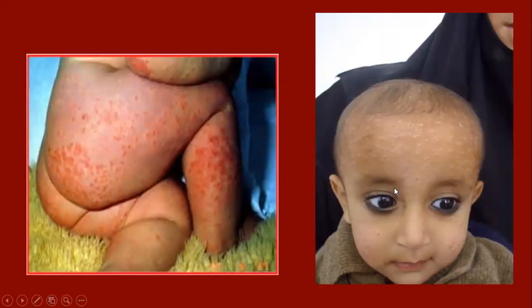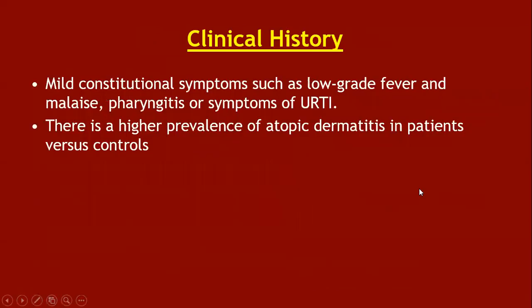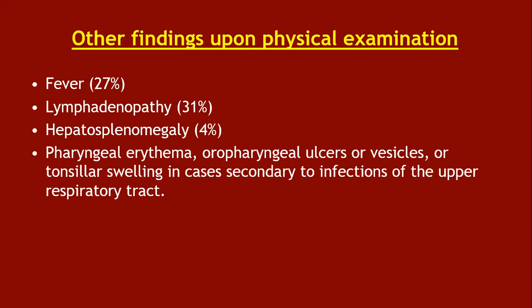Over days to weeks, the papules acquire a smooth, polished, lichenoid appearance. Mild constitutional symptoms include low-grade fever, malaise, pharyngitis, and symptoms of upper respiratory tract infection. There is a high prevalence of atopic dermatitis in patients versus controls. Other findings include fever in 27%, lymphadenopathy in 31%, hepatosplenomegaly in 4%, and pharyngeal erythema, oropharyngeal ulcers or vesicles, or tonsillar swelling in cases secondary to upper respiratory tract infection.